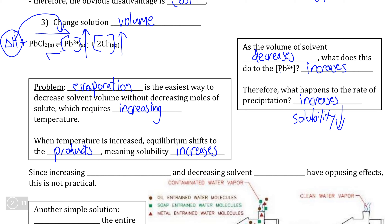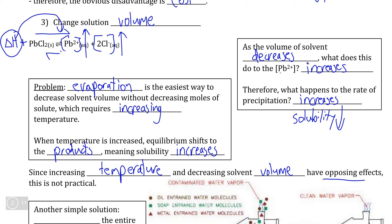The problem is that increasing the temperature to decrease the solvent volume has two contradictory effects: even though removing a certain volume of solvent means the concentration increases would push the equilibrium towards the precipitate, the increase in temperature required to do that has the opposite effect. Because these two effects oppose each other, this is not a practical solution for water treatment.